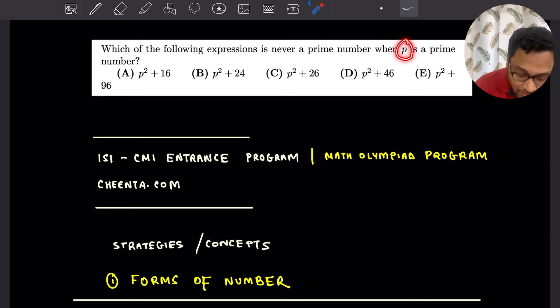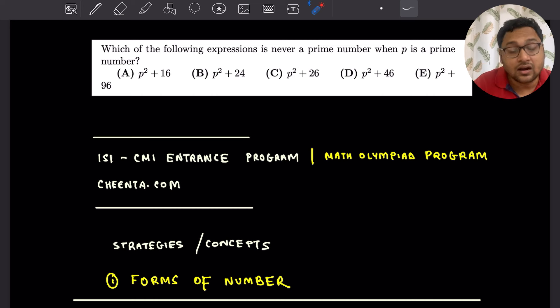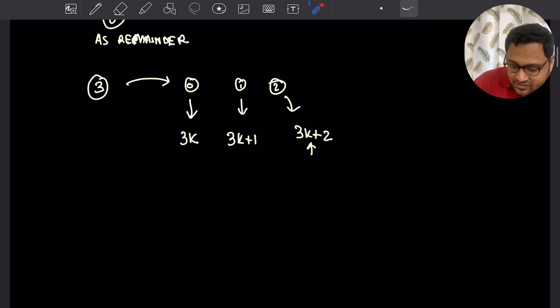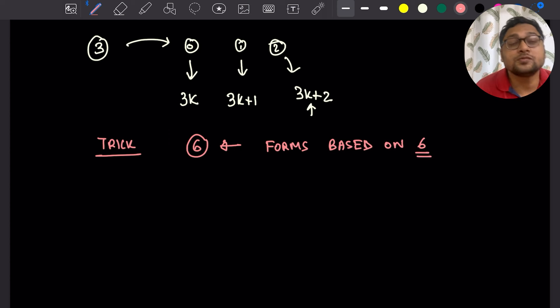It starts with a prime number p. What is the one expression here that is never a prime? It's always a composite number, always divisible by something else. Here is the trick: you have to use the number 6, the forms based on 6, to really unlock this problem. Of course, how do you know that you have to use the base of 6? It comes with experience of solving a lot of problems at the Math Olympiad level.